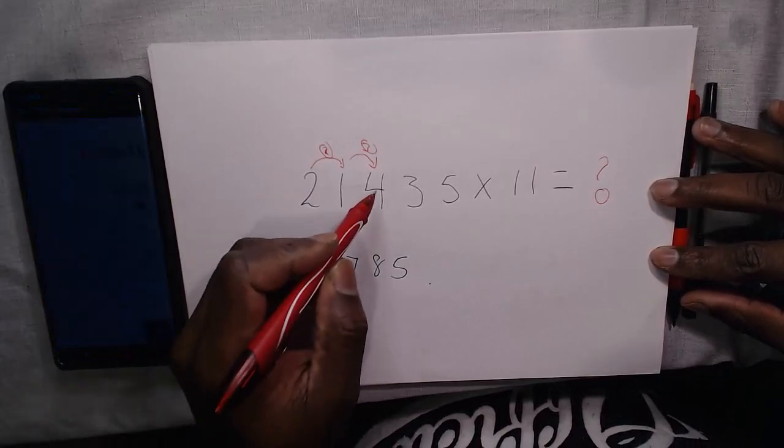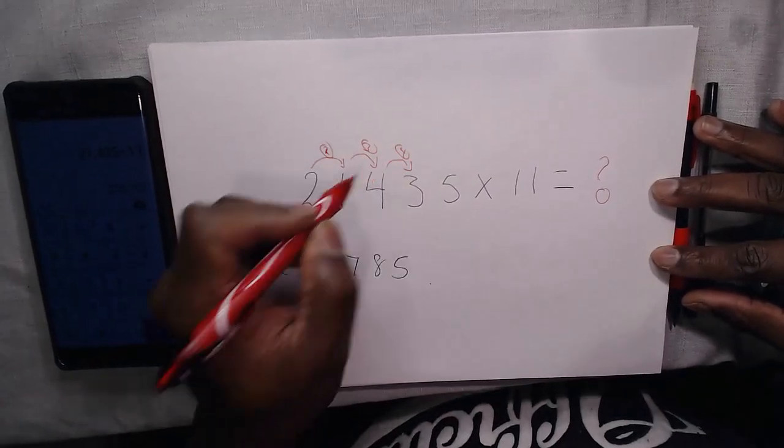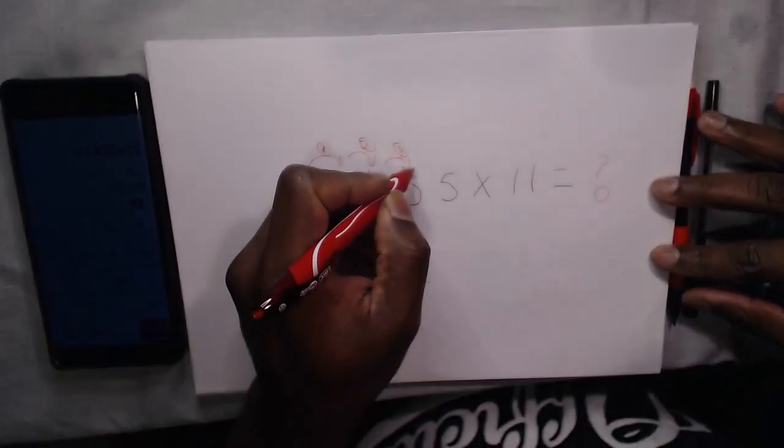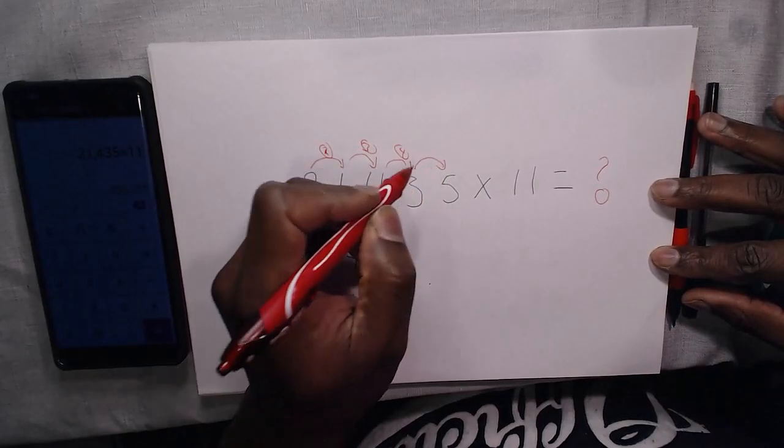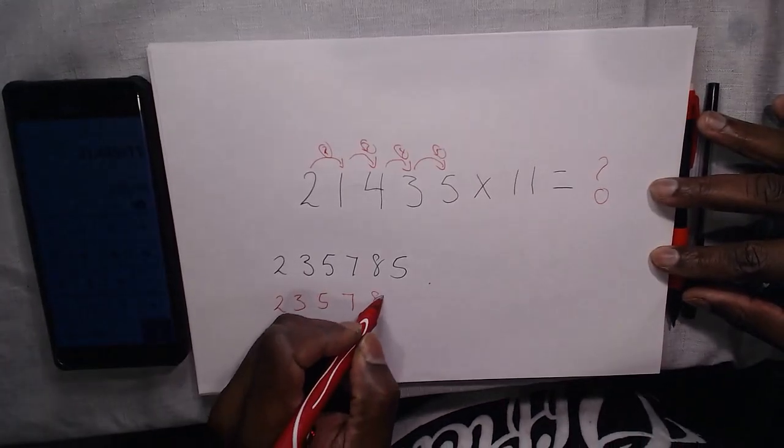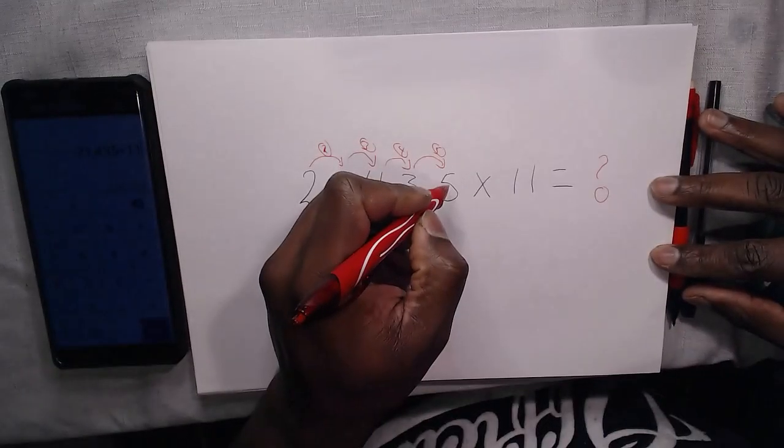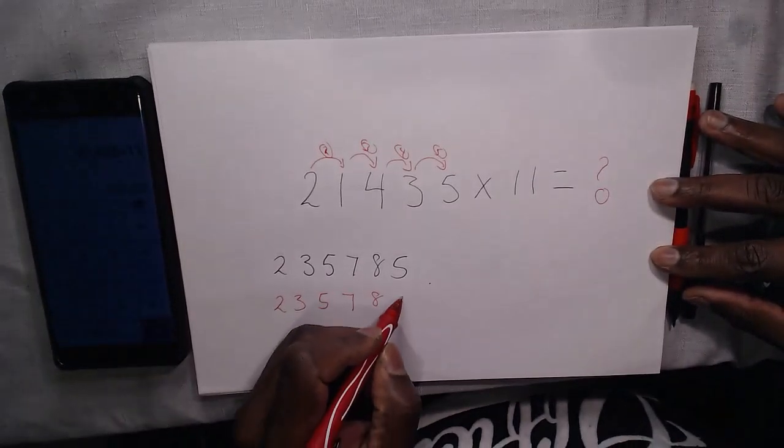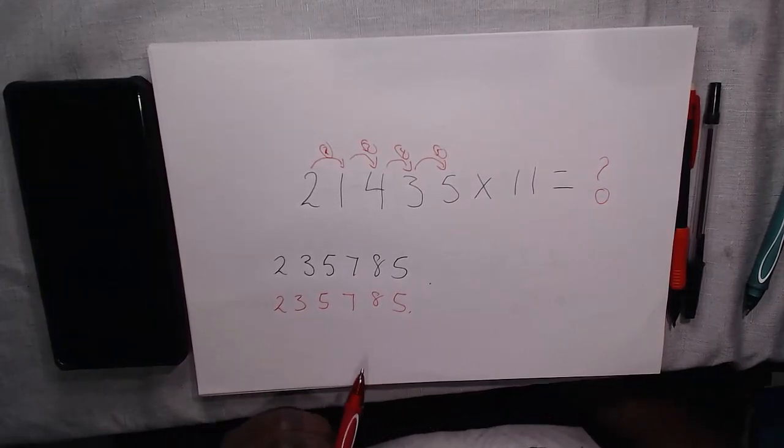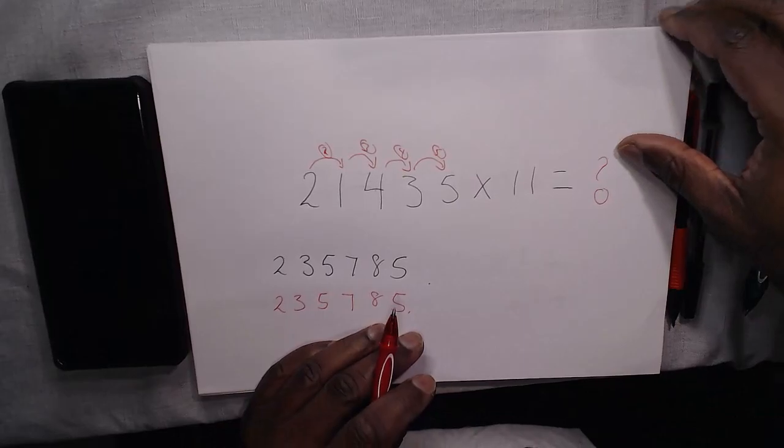Add the third number to the fourth number. That gives us 7. And then we add the fourth number to the fifth number. That gives us 8. And then once again, we simply record the last number, which is 5. Now, how easy was that? And we get an answer of 235,785.